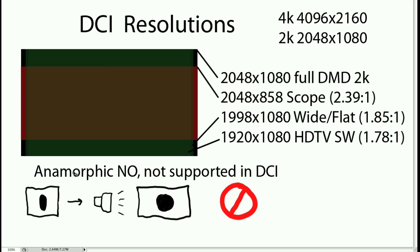The most important thing to note is that anamorphic is not supported in DCI. Anamorphic is where you have a squeezed picture, commonly used in widescreen film, which goes through an anamorphic lens that stretches the image out. Why isn't it supported? There are probably a lot of reasons. The lenses required for DCI projectors don't lend themselves cost-effectively to anamorphic, and it's much easier to deal with non-anamorphic square pixels.